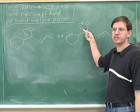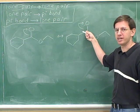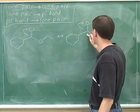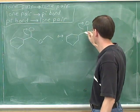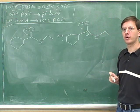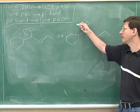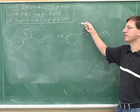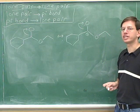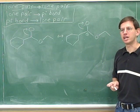This carbon just lost its pi bond, so it has lost electrons and it's become more positive. Where are the electrons going to? The head of the arrow is on the oxygen, so the oxygen gained a lone pair.